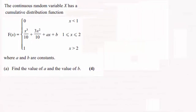Hi there. Now for this question we're told that the continuous random variable x has a cumulative distribution function f(x) equaling 0 when x is less than 1, and it equals x³/10 + 3x²/10 + ax + b where x is greater than or equal to 1 but less than or equal to 2, and it's equal to 1 when x is greater than 2, where a and b are constants.